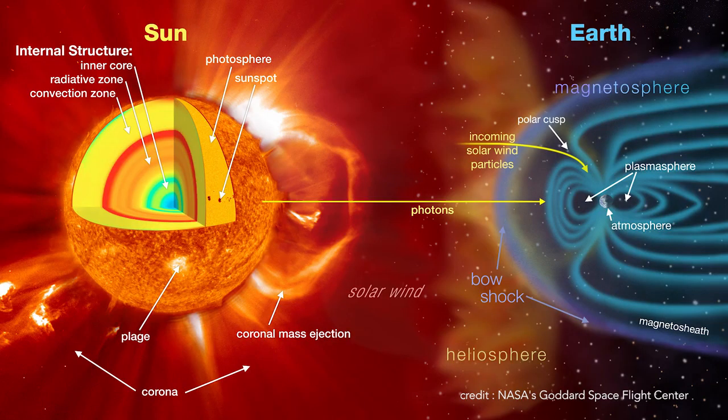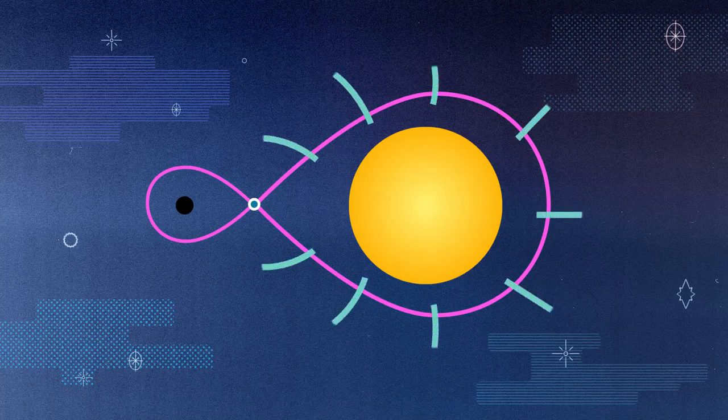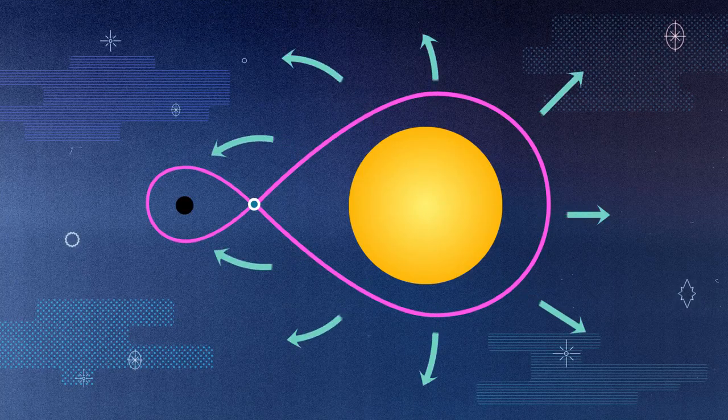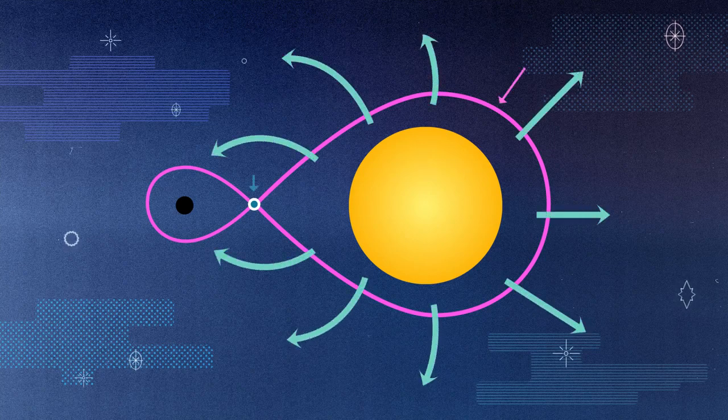Many stars have winds. Our sun does, but its winds are considered puny by stellar standards. Massive blue stars can blow away up to 100 million times more mass than our own sun does. Such strong winds can be captured by the gravity of the black hole and fall in towards the event horizon.